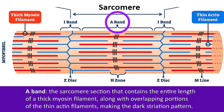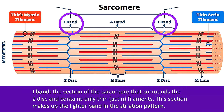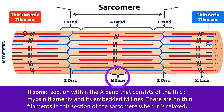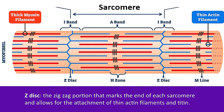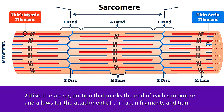First there is an A-band on each sarcomere, which is a section that contains the entire length of the thick myosin filaments along with an overlapping portion of the thin actin filaments — this section makes up the dark part of the striation pattern. There's also an I-band, which is the section of the sarcomere that surrounds the z-disc and contains only thin actin filaments, making up the lighter band in the striation pattern. The H-zone is the section within the A-band that consists of the thick myosin filaments and its embedded m-lines, with no thin filaments present when the sarcomere is relaxed.